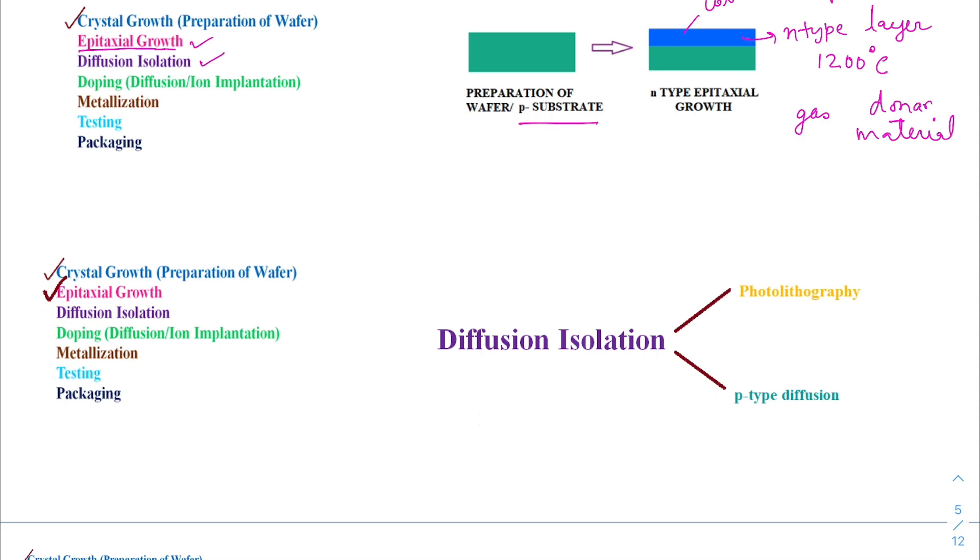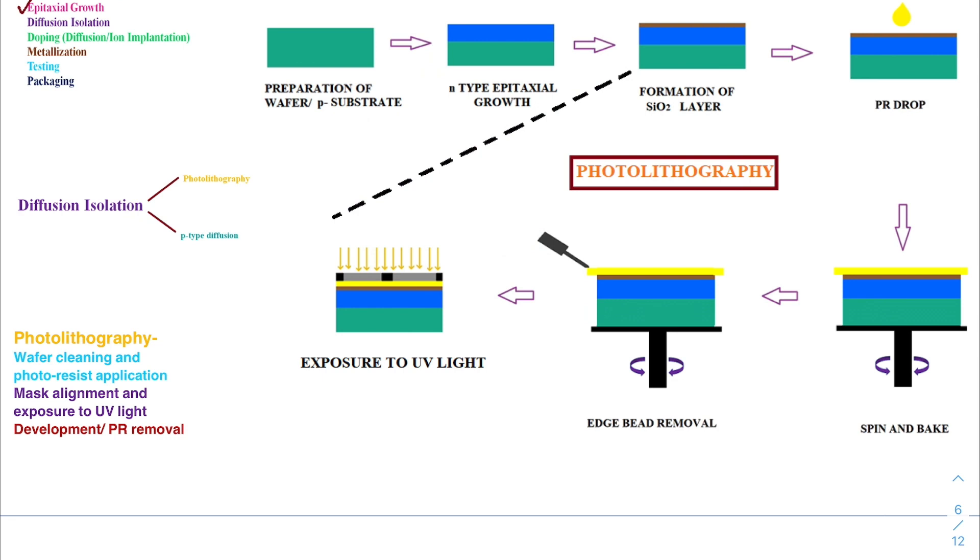The next step is diffusion isolation. In this process, the N-type epitaxial layer is isolated into islands so that on each island a transistor or other component can be fabricated. The two major procedures are photolithography and p-type diffusion. Photolithography is a process in which a pattern is transferred from a photo mask onto the silicon substrate using UV light. It comprises three Greek words: photo means light, lithos means stone, and graphy means writing.